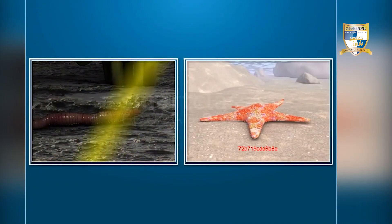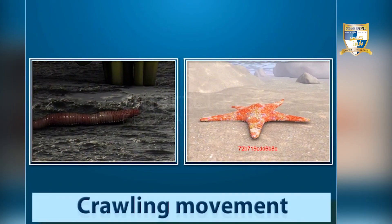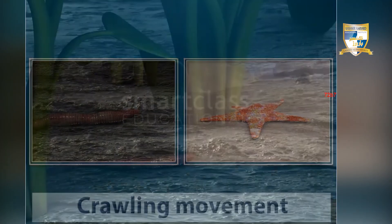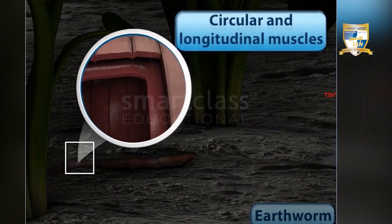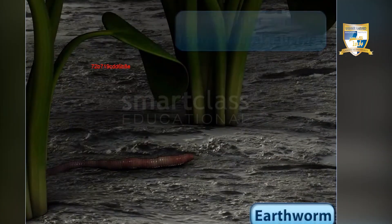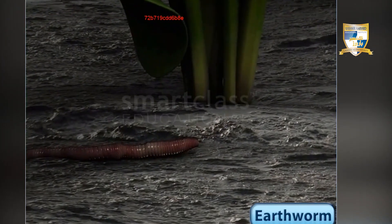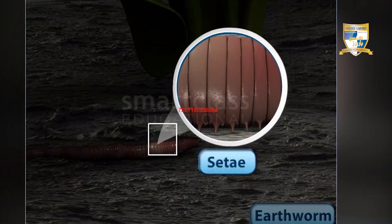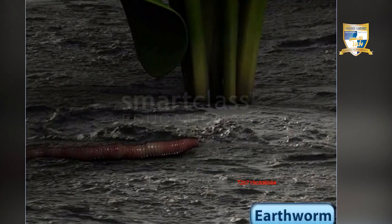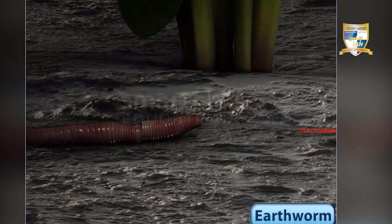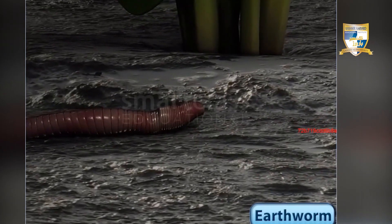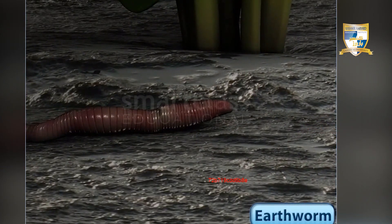Animals like earthworms and starfish show crawling movement. Earthworms move with the help of circular and longitudinal muscles that run circularly and along the entire length of the body. They also possess numerous bristle-like structures called setae along the length of the body. During locomotion, the circular and longitudinal muscles contract alternately, thereby shortening and lengthening the body.